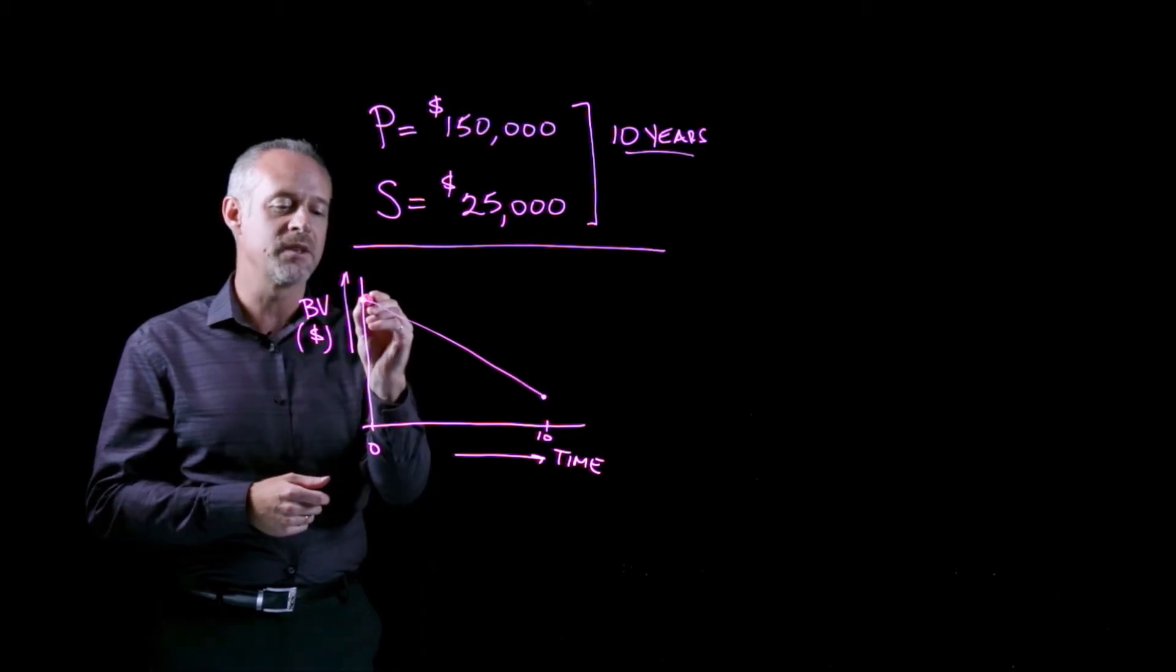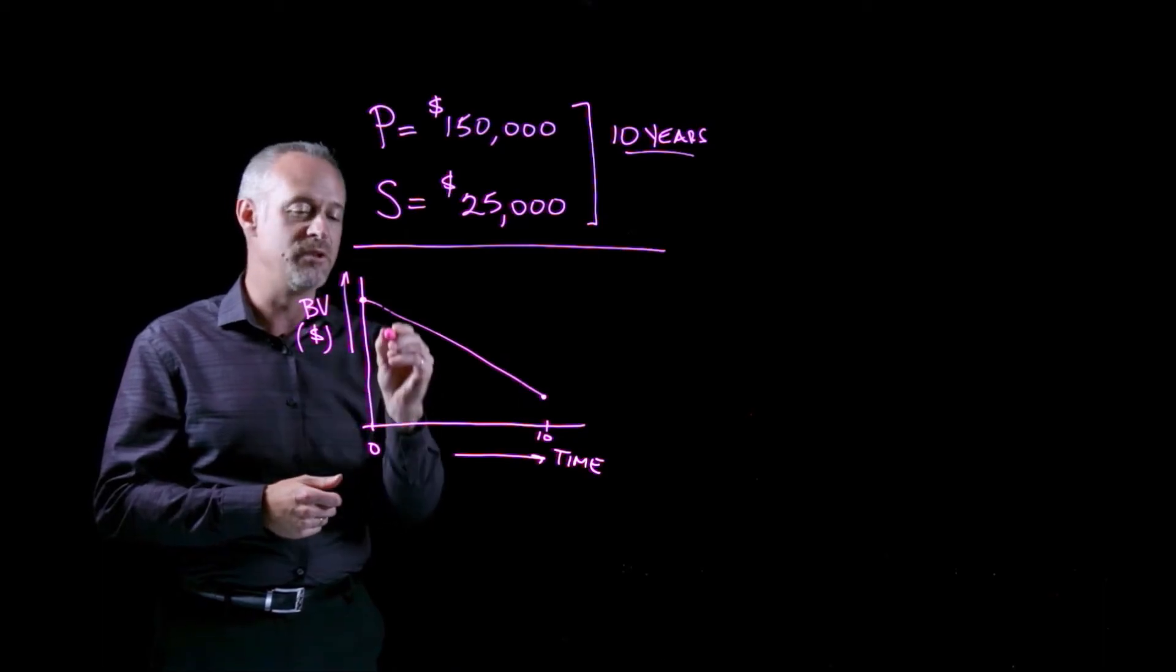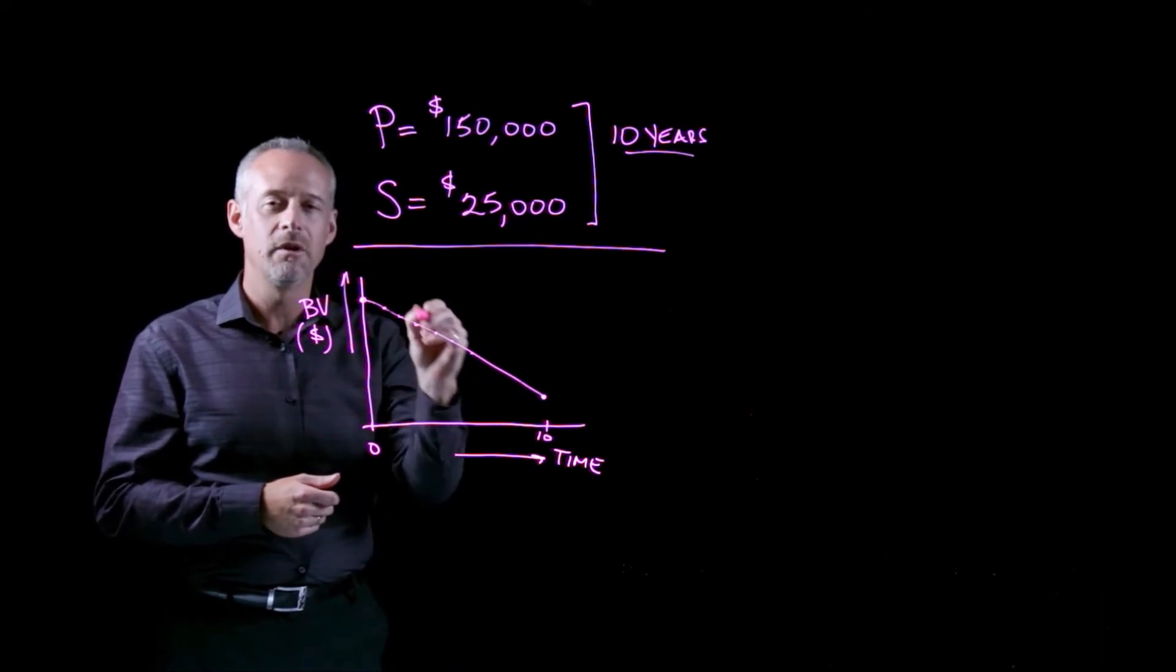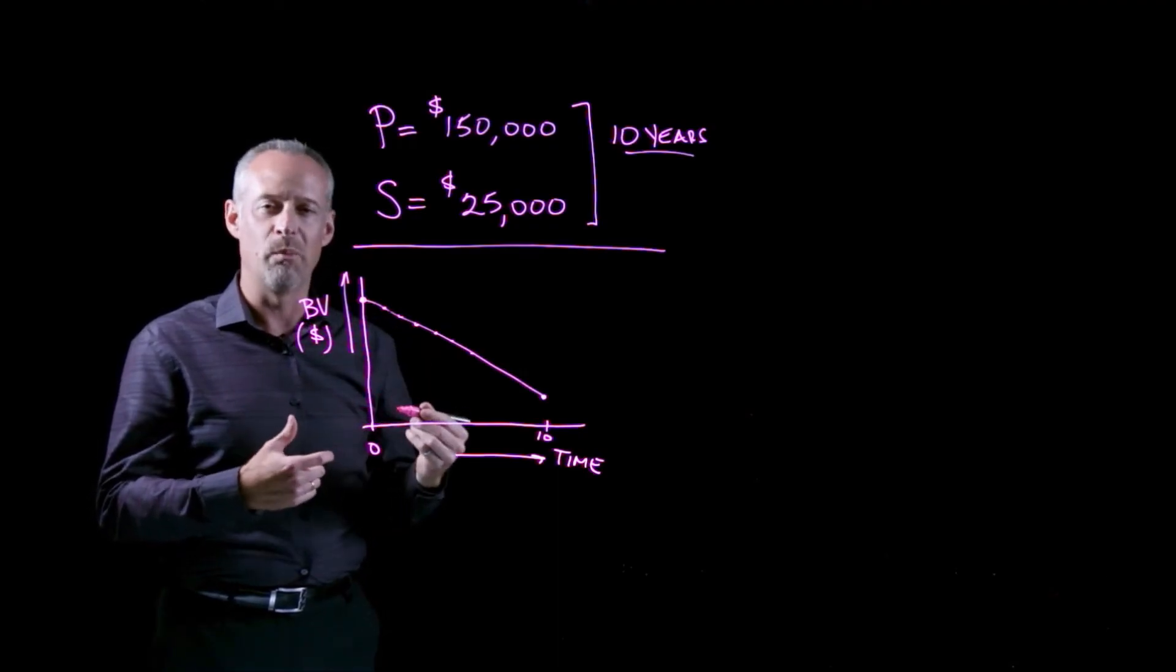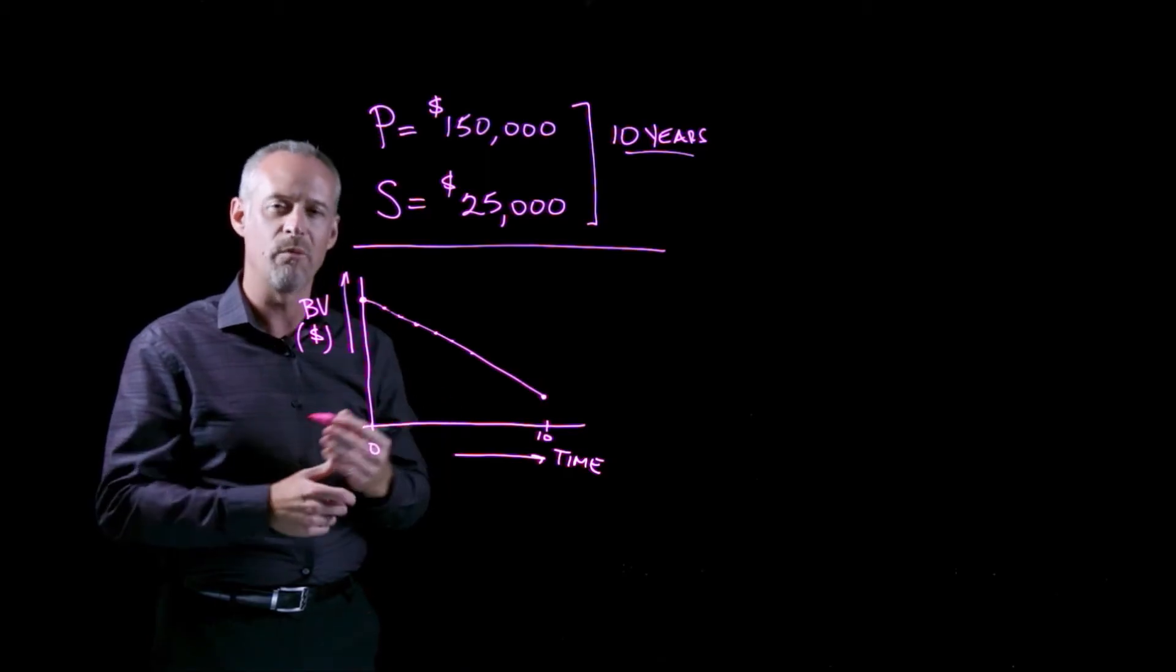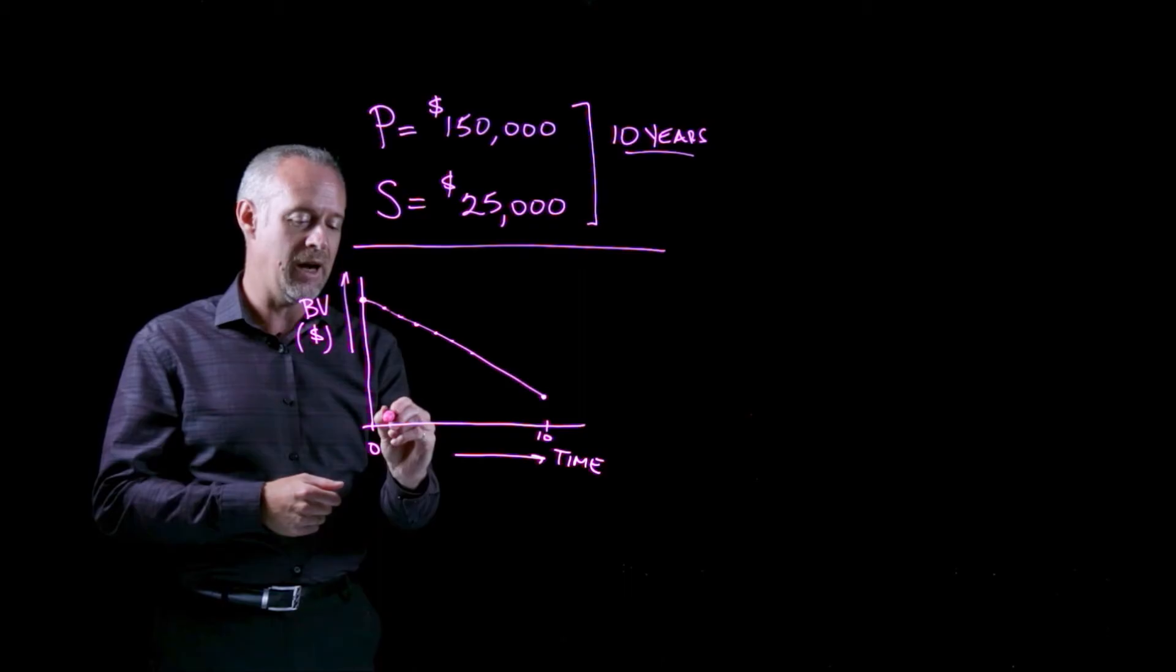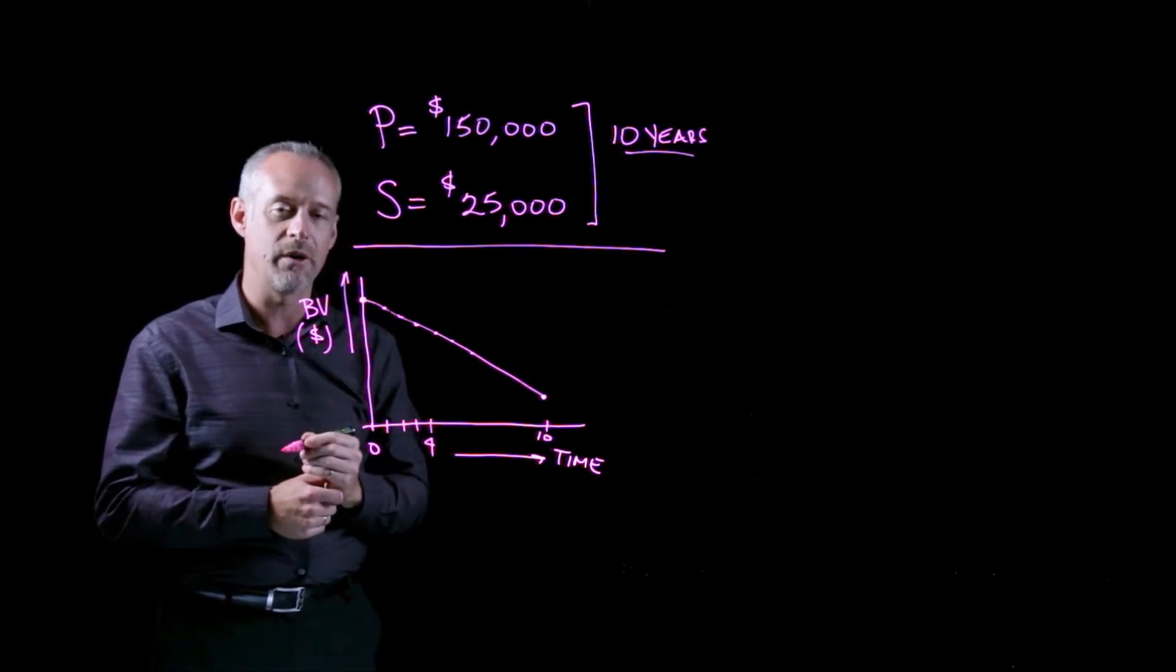Now, the asset doesn't really lose value continuously like a line, it loses value in discrete lumps equal to each year that the firm prepares its financial statements. And we'll learn more about financial statements later on. So the question becomes, after four years, what is the book value of the equipment?